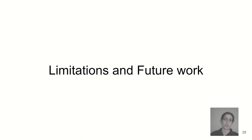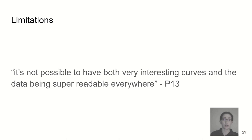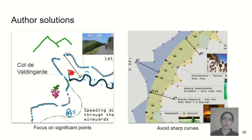Incorporating images around numeric data is actually quite tricky, and this rolls us into our limitations and future work. Along with the uses of idiosyncratic timelines, we also encountered some limitations. As P13 puts it, it's not possible to have both very interesting curves and the data being super readable everywhere. She got around it by aligning the axis to make the peaks in the elevation stand out from the curve, thereby highlighting those victory moments. My colleague overcame the readability issue by ensuring his curves were fairly shallow, making the distances fairly easy to parse.